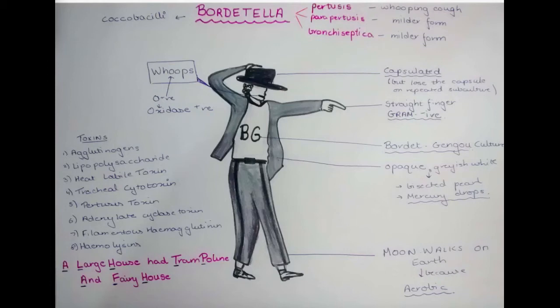Today I'm going to talk about Bordetella. Bordetella has mainly three species: Pertussis, Parapertussis, and Bronchioseptica. Pertussis causes whooping cough, and Parapertussis and Bronchioseptica cause a milder form of whooping cough.